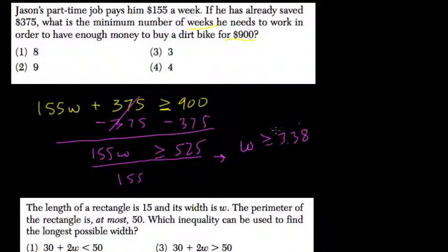So what's your answer then? Well, you can't work 0.38 of a week, so you've got to finish that week. So that means you've got to work four weeks in total to get the $900 needed.